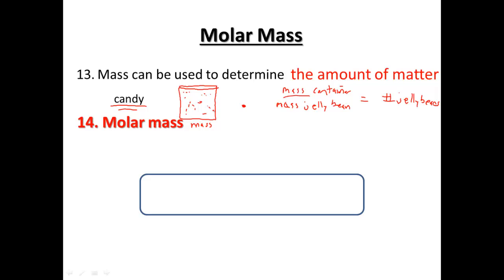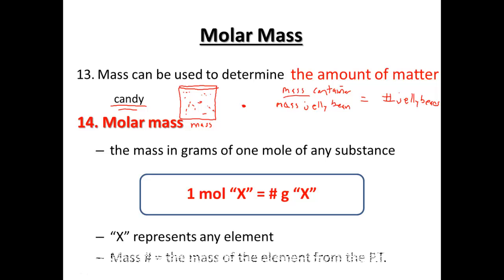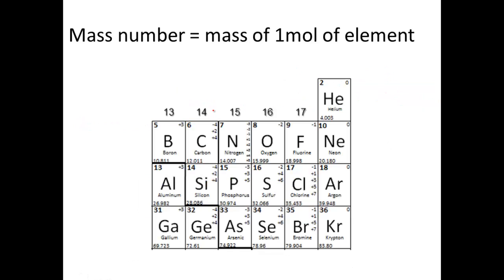We're going to come up with what we call the molar mass. The molar mass is the mass in grams of one mole of any substance. We look at it as: one mole of X equals the number of grams of X, where X represents any element on the periodic table. The mass number equals the mass from the periodic table.